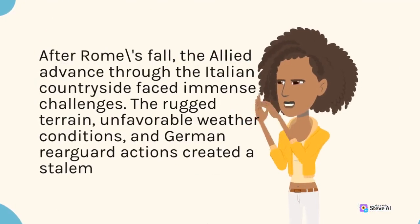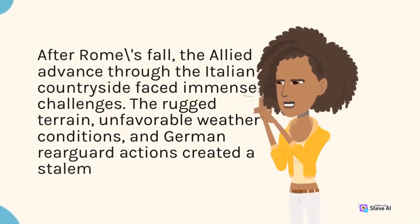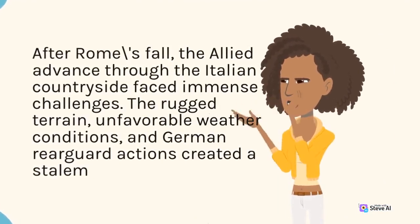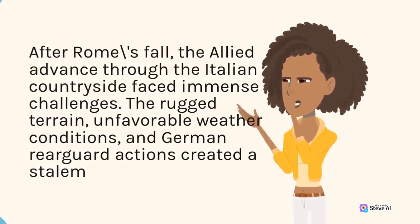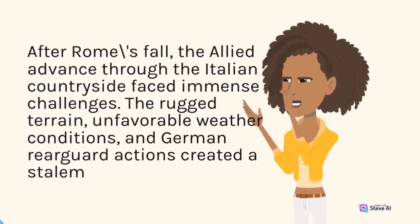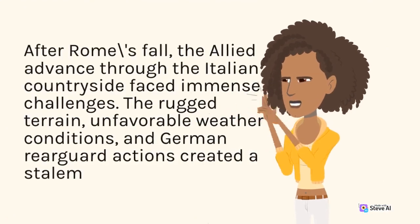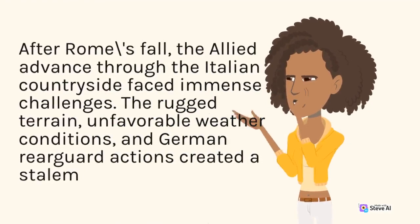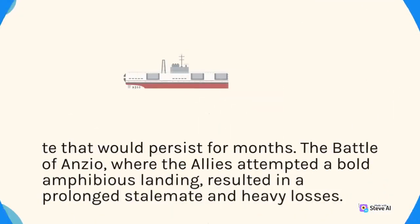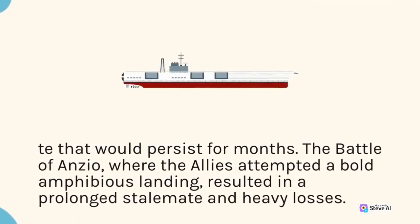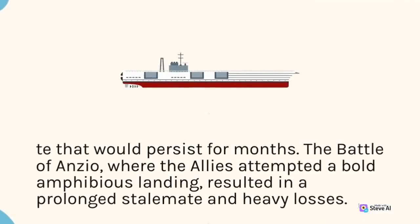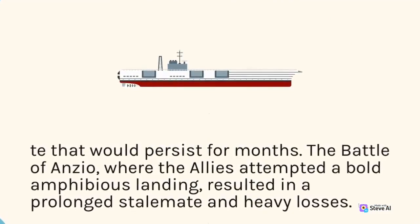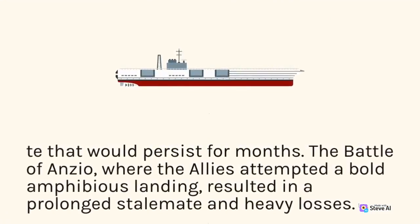After Rome's fall, the Allied advance through the Italian countryside faced immense challenges. The rugged terrain, unfavorable weather conditions, and German rearguard actions created a stalemate that would persist for months. The Battle of Anzio, where the Allies attempted a bold amphibious landing, resulted in a prolonged stalemate and heavy losses.